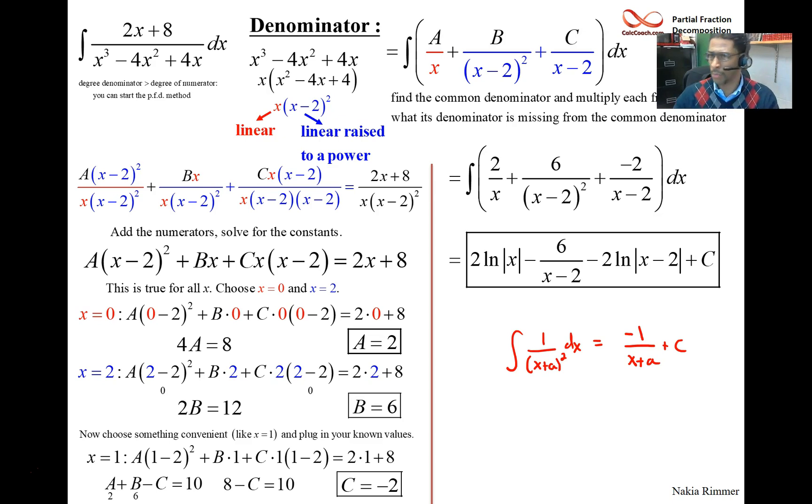This is an indefinite integral, so we plus C and we're done. We have found the antiderivative. We could possibly put the natural logs into one term if we wanted to, but this is it though. This guy is the antiderivative of the original. If you actually took the derivative of what's in the box here and made it through all the hard work, you would actually get the original integrand.